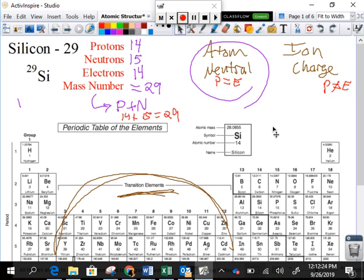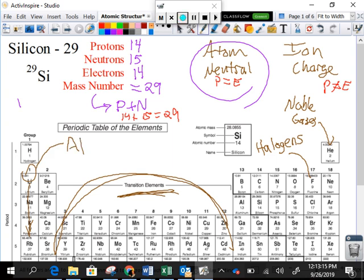Now, the family here and the family here do have special names. The 17th family is called the halogens. And the last group is called the noble gases. I skipped two groups. This group here on down, that is called the alkali. And group two is the alkaline earth.